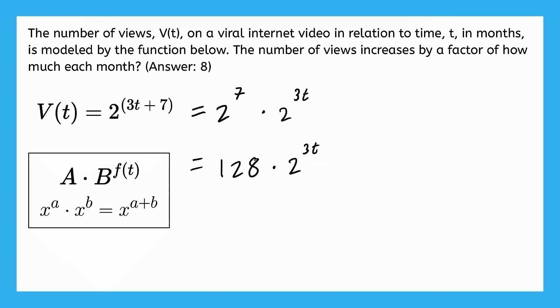So based on what we've talked about in previous videos, we should all be able to agree now that 128 is the initial number of views before we start analyzing the change in the number of views. And the only part of the expression that we need to pay attention to now as we interpret the change is the part of the expression that involves the variable t. So what do we do with t?